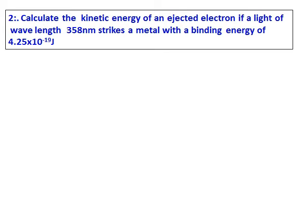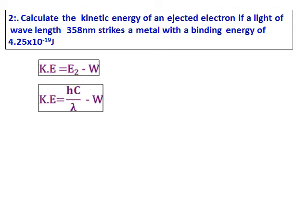Calculate the kinetic energy of an ejected electron if a light of wavelength 358 nanometre strikes a metal and the binding energy of the electron is also given. In this case, since we have asked you to calculate the kinetic energy of the ejected electron, use the same formula.